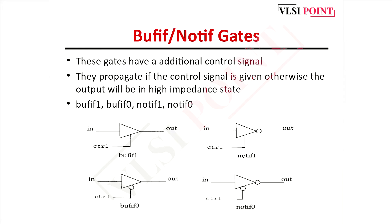Now we study the bufif/notif gates. These gates have an additional control signal - they propagate if the control signal is active; otherwise the output will be in high impedance state. Four different types are there: bufif1, bufif0, notif1, and notif0. Bufif1 means buffer with active high control signal, and bufif0 means buffer with active low control signal.